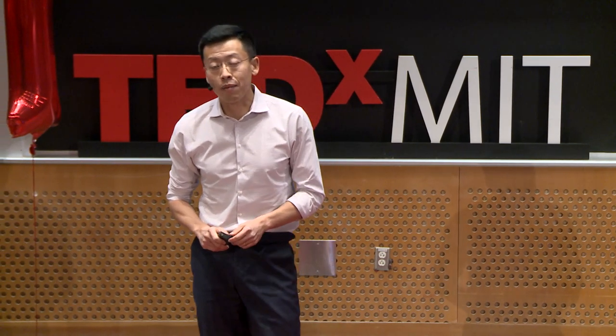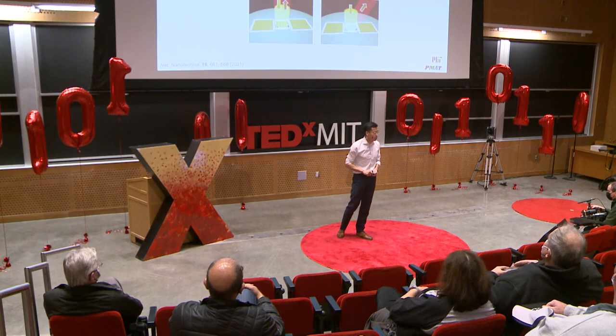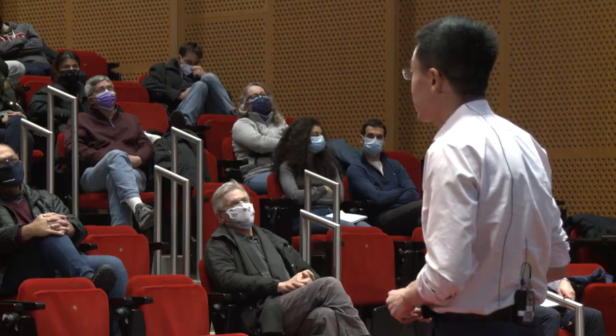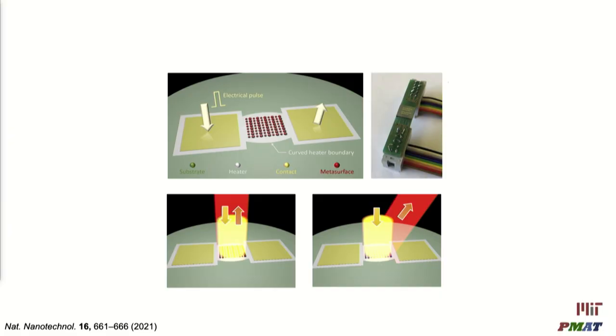This varifocal lens will serve as a basic building block for a variety of complex optical systems — for example, zoom lenses in camera modules or microscopes. To further improve control of the phase-change process, we fabricated this metalens on a micro-heater integrated on-chip. In this case, we can apply different electrical signals to easily and precisely control the phase-change process and allow arbitrary functionality changes. This is a very important step towards realizing fully integrated reconfigurable optical systems.